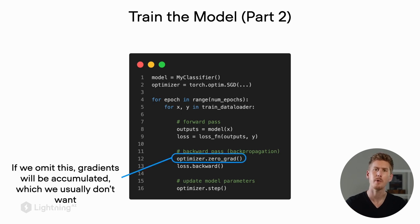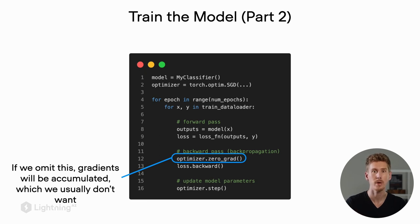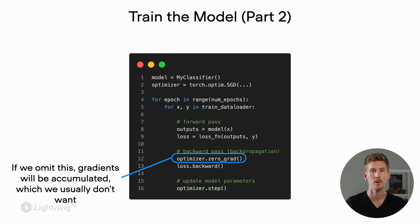You might wonder what the zero_grad method does. zero_grad essentially resets the gradients from the previous iteration, which is exactly what we want — we don't want to accumulate them. There are certain edge cases where accumulating gradients may be desirable, but that is a very specific and advanced use case we will cover later. By default, it is always recommended to call zero_grad before doing the backward calculation and updating the model parameters with step.